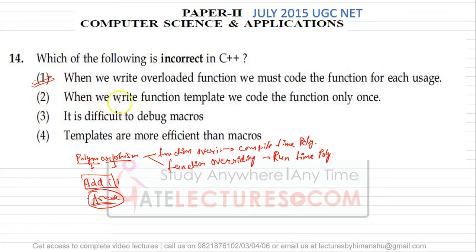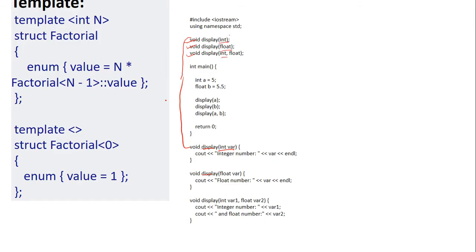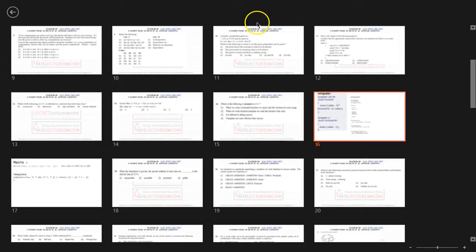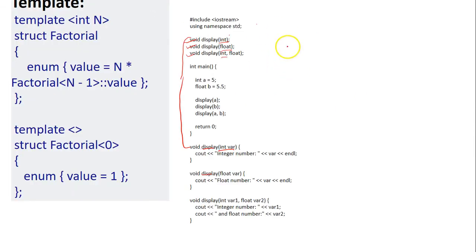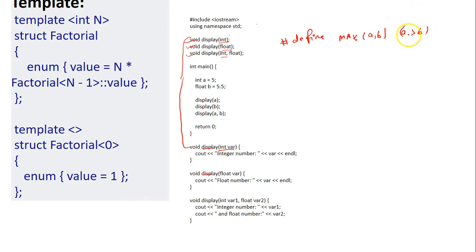The second statement says: when we write function templates, we code the function only once. In C++, we have a concept called function templates. A function template is similar to macros — with macros using the preprocessor directive, you define something like '#define max(a, b)' with its definition.